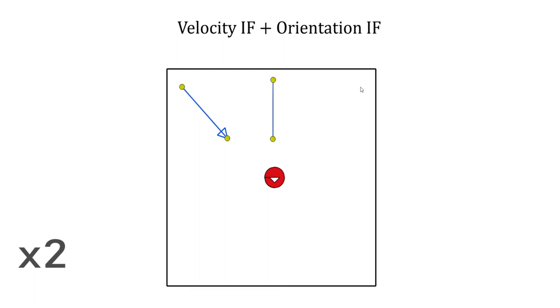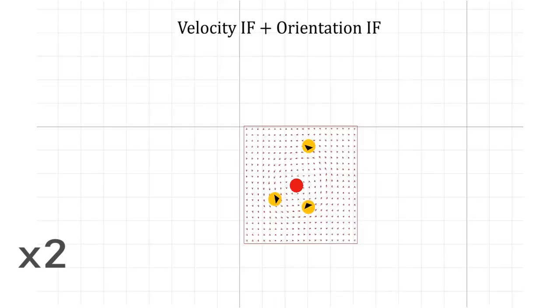It's also possible to create orientation fields, here making agents look at the source, and to combine this field with the previous velocity field to obtain agents revolving around the source while looking at it.